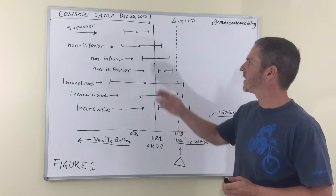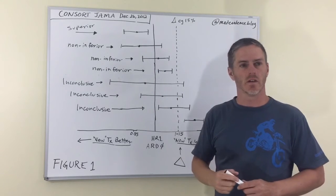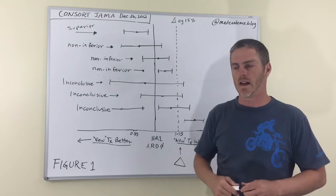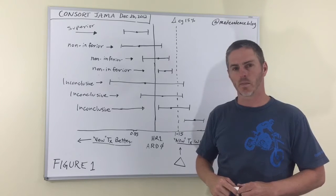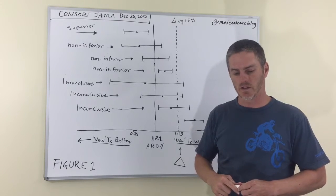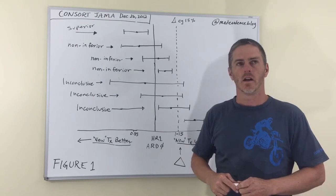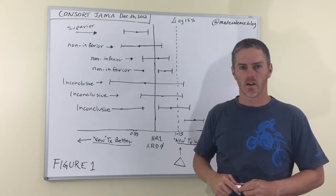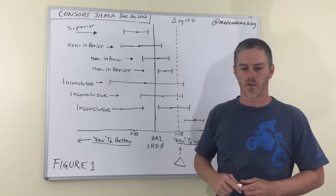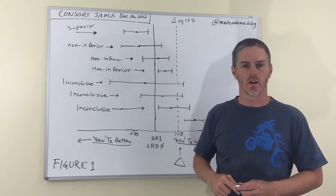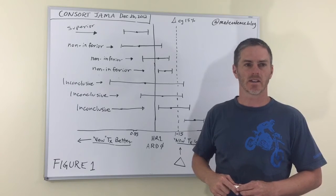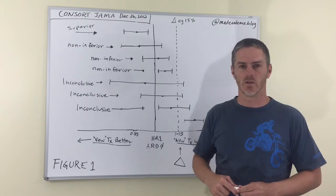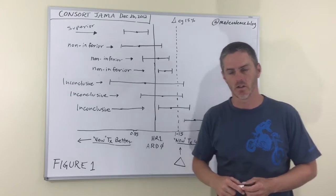When they published this CONSORT revision of guidelines for the reporting of non-inferiority trials in December 2012, I followed it up with a letter to the editor, which was published, where I advocate changing this standard for non-inferiority because it's somewhat arbitrary and it's biased strongly in a way to favor non-inferiority or superiority of a new treatment. I'd like to explain that to you right now.